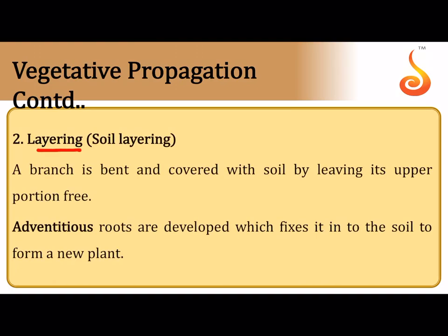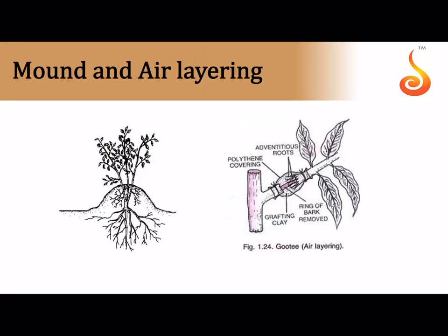In layering, a branch is bent, covered with soil, and that part develops into a new plant. In mound layering, a mound of soil is placed on the pruned base of a stem — the covered part develops roots and the branches can be cut and grown as individual plants. In air layering, a branch's bark is peeled off to expose the xylem ring, covered with clay and auxin, wrapped in a polythene bag — adventitious roots grow and the branch is cut to grow as an independent plant.